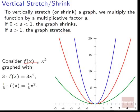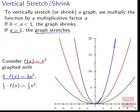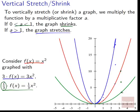Consider f(x) = x² in red. Comparing to 3·f(x) in blue — since a = 3 > 1, the parabola has been stretched upward; every point is 3 times higher. The green graph shows (1/3)·f(x), where a = 1/3 is between 0 and 1, so it's been squished down to one-third the height. We can either stretch with a factor greater than 1 or squish with a factor less than 1.